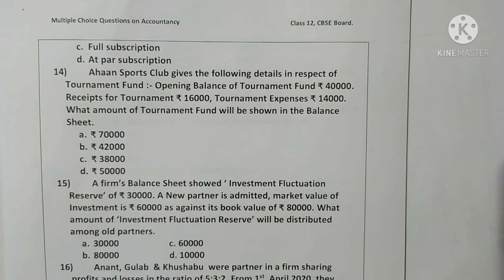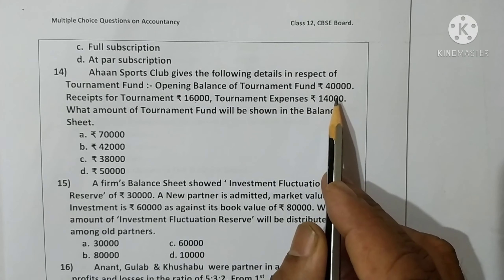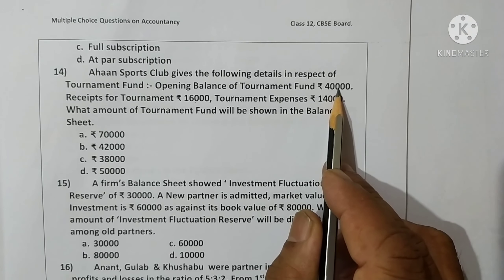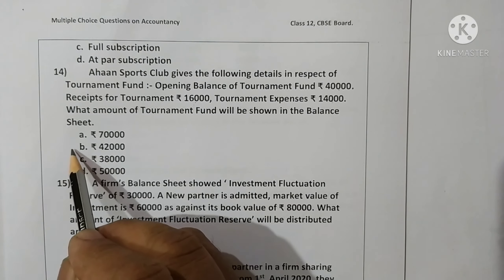Question fourteen: Ahaan's sports club gives the following details for tournament fund — opening balance Rs. 40,000, receipts from tournament fund Rs. 16,000, tournament expenses Rs. 14,000. The amount of tournament fund shown in the balance sheet: receipts 16,000 minus expenses 14,000 equals Rs. 2,000; added to 40,000 gives Rs. 42,000. Option B is correct.